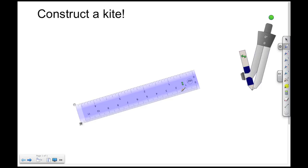Welcome back to Speller Tutorial Services. In today's video, we're going to continue with our constructs. Today we're going to construct the kite with a straight edge and a compass. We'll begin by drawing a line segment.